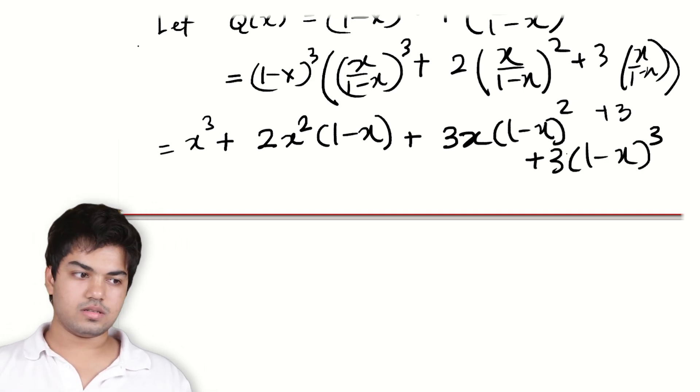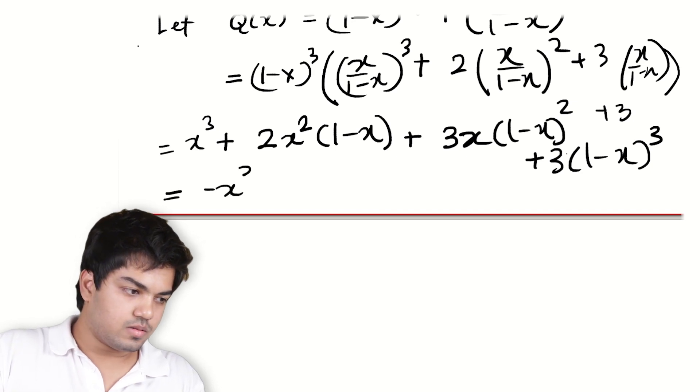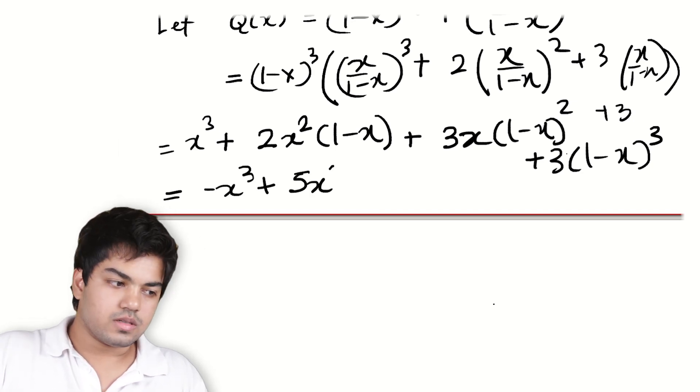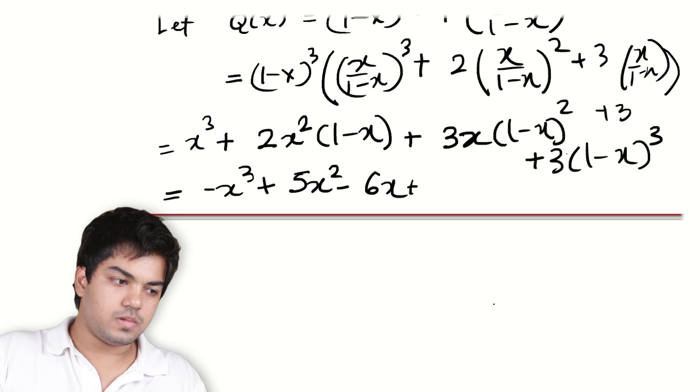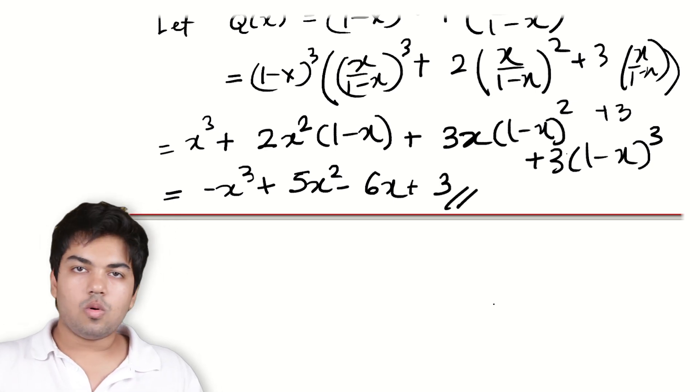Plus 3x(1-x)² plus 3(1-x)³. If you expand it out and collect the terms again, the cubic you will get is -x³ + 5x² - 6x + 3. It's not much work at all. You can do this.